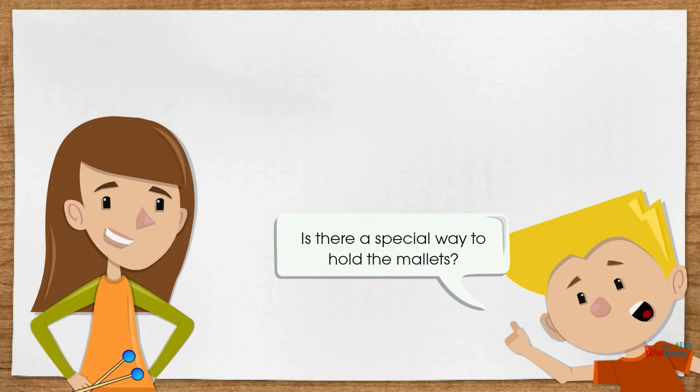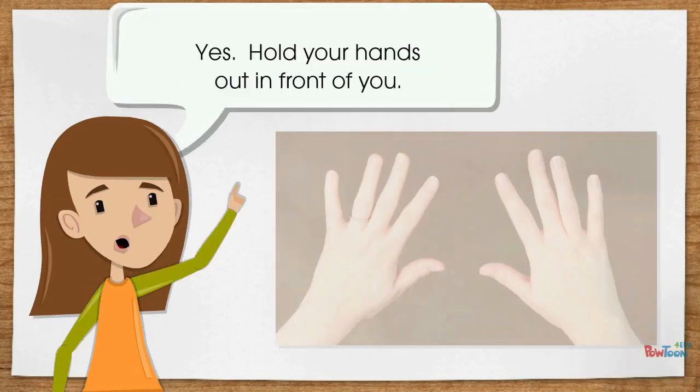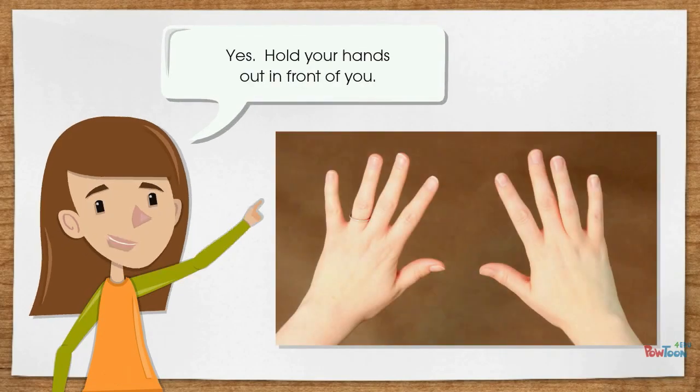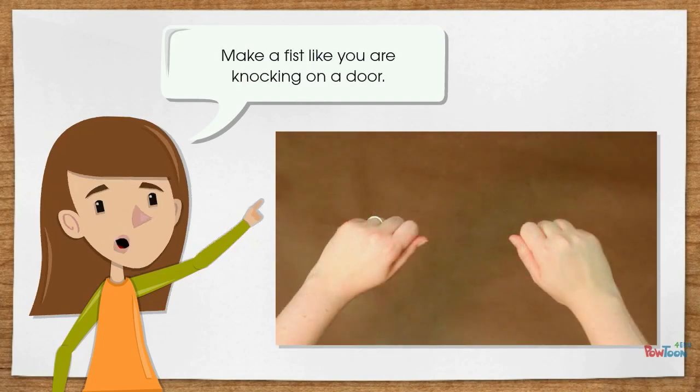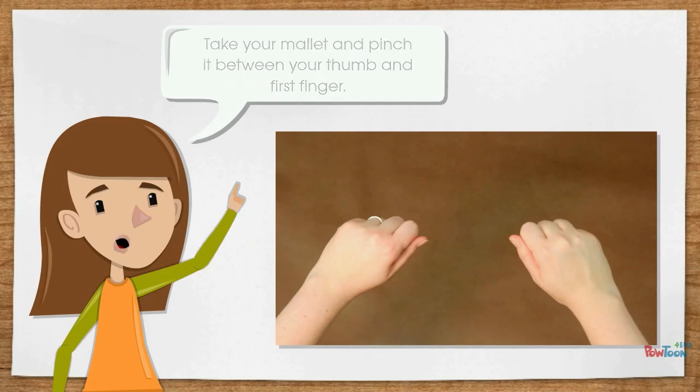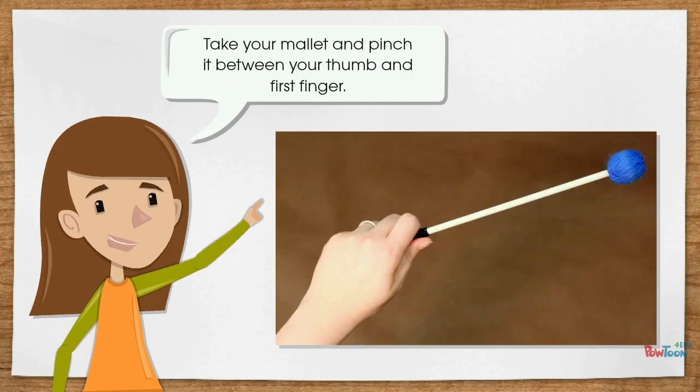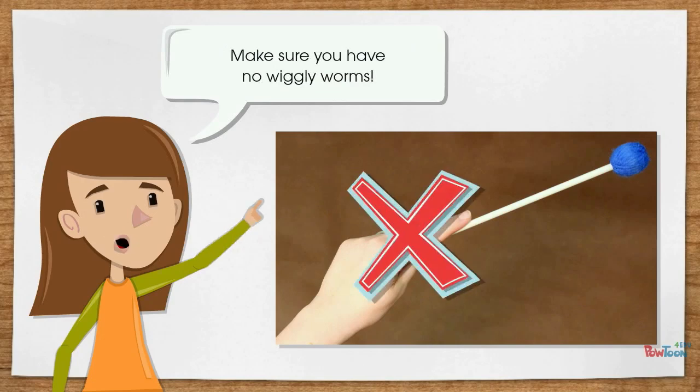Is there a special way to hold the mallets? Yes, hold your hands out in front of you. Make a fist like you are knocking on a door. Take your mallet and pinch it between your thumb and first finger. Make sure you have no wiggly worms.